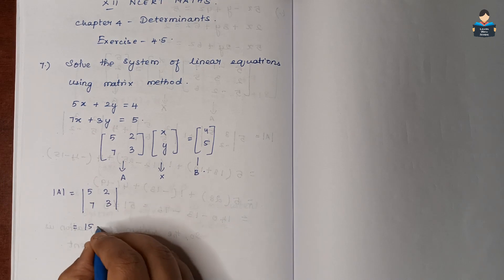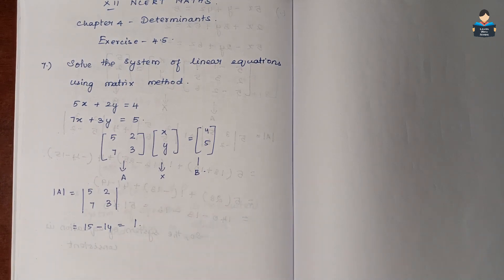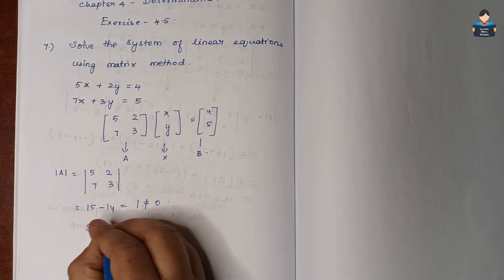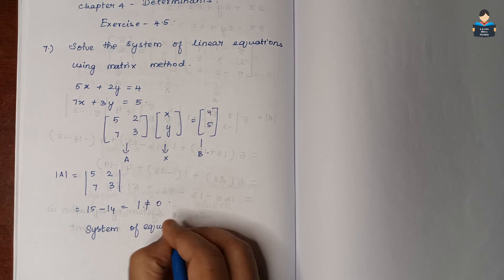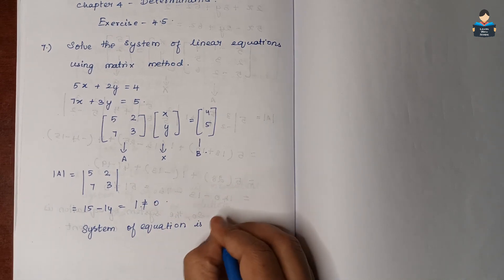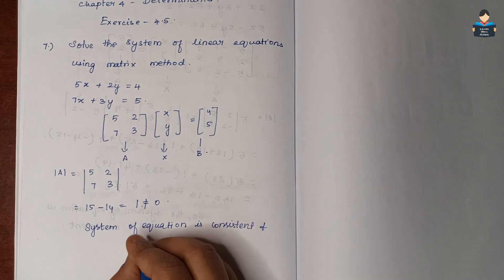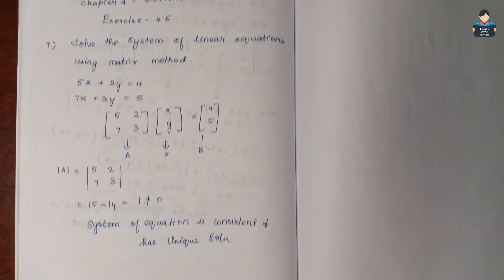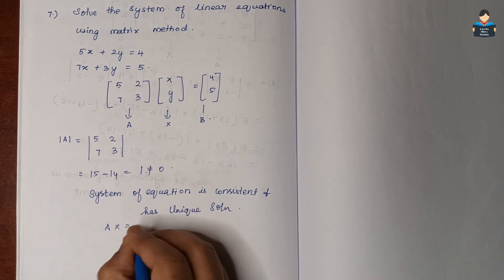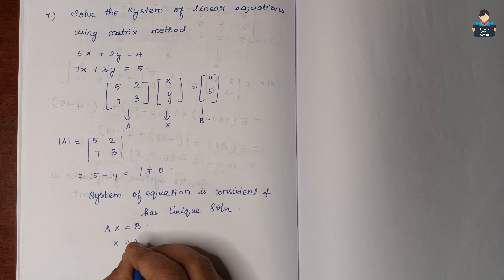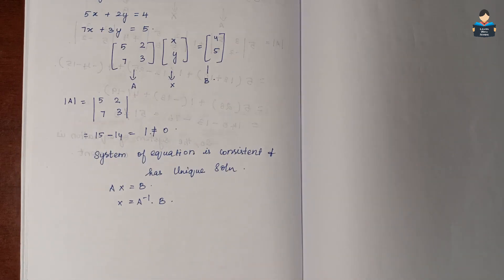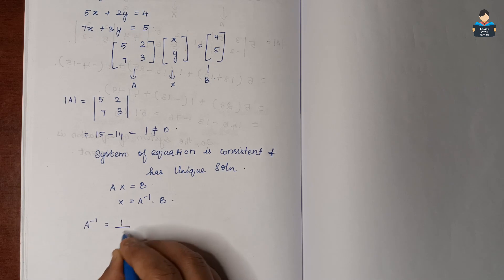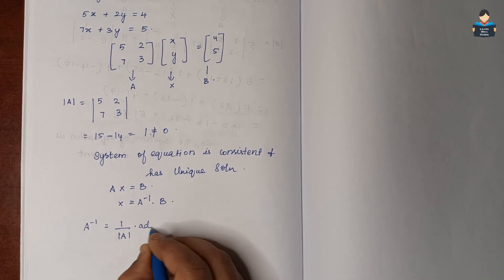Now we find the determinant of A: 5 times 3 is 15 minus 14, which equals 1. So the determinant of A is 1.